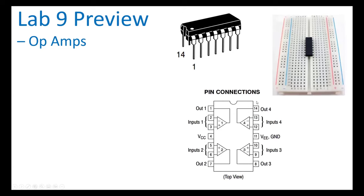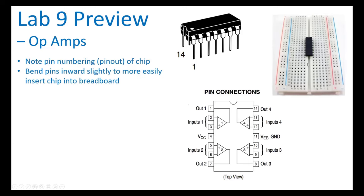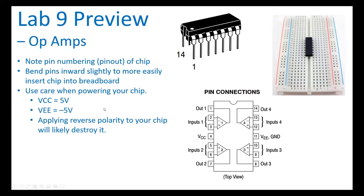This is the op-amp chip you'll be using — it actually has four op-amps in it. Note the pin numbering: pin one is identified by a dot or depression on the chip, and sometimes a divot or ridge indicating which end has pin one, so you can orient it with the diagram. I find you have to bend the pins in ever so slightly to fit them into the breadboard. Use care when powering the chip: Vcc is 5 volts, Vee is minus 5 volts. If you reverse polarity you will likely destroy the chip, and if it gets hot you've likely destroyed it — you have spares just in case.